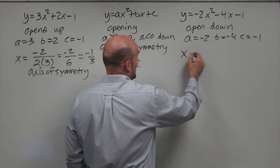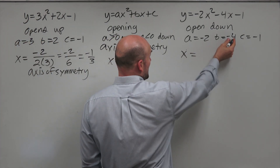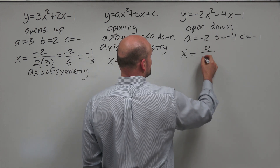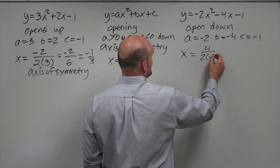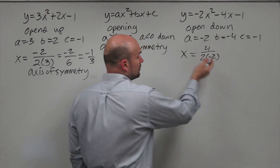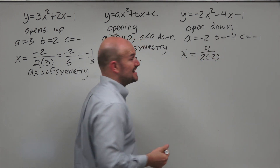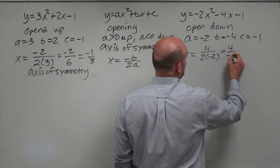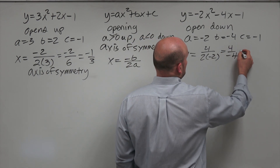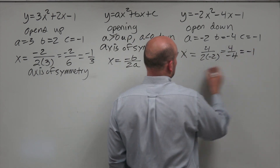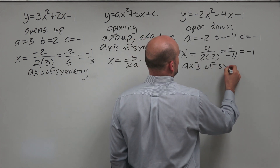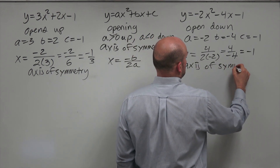For the second equation, x equals the opposite of negative 4, which is positive 4, divided by 2 times negative 2. Two times negative 2 is negative 4, so that's 4 over negative 4, which equals negative 1. So the axis of symmetry is x equals negative 1.